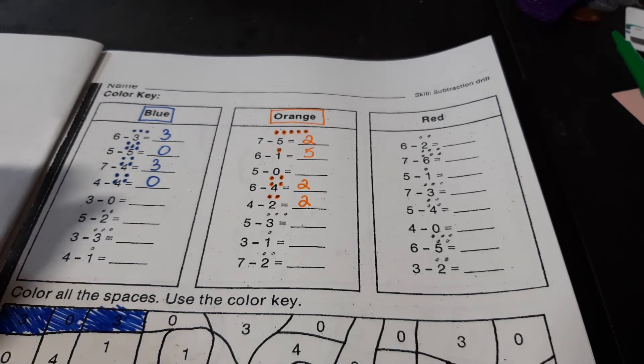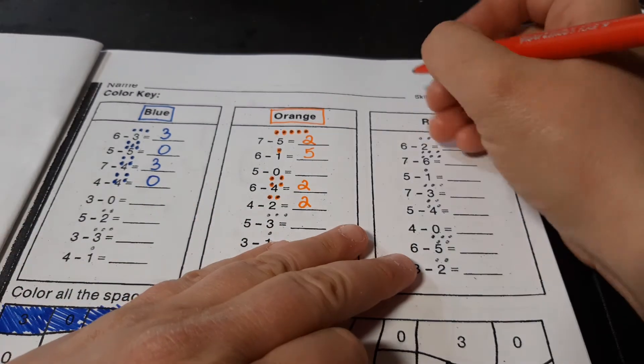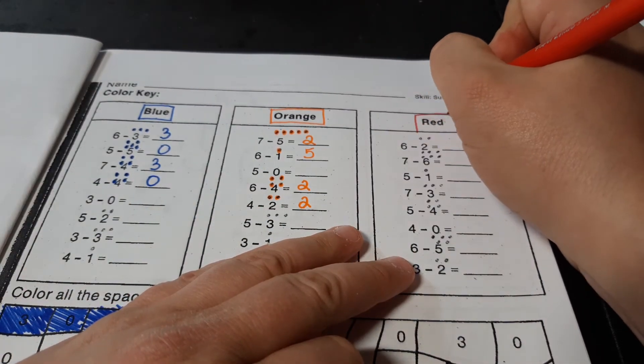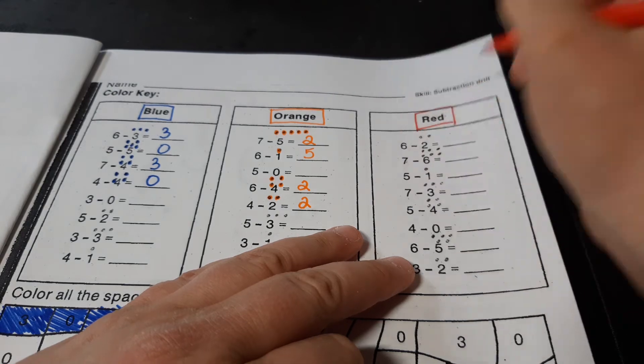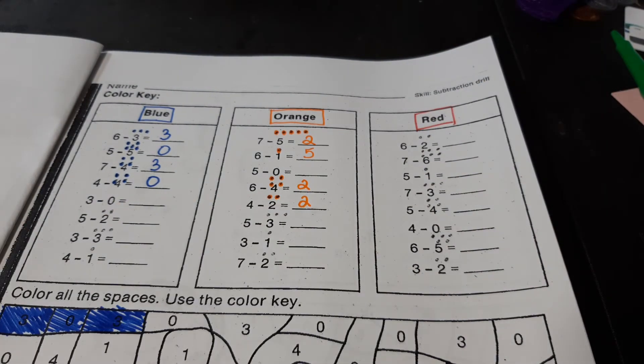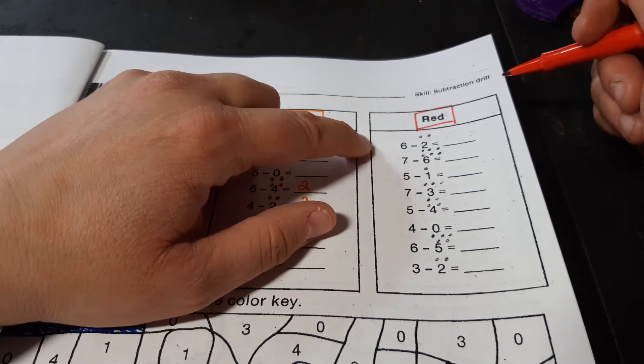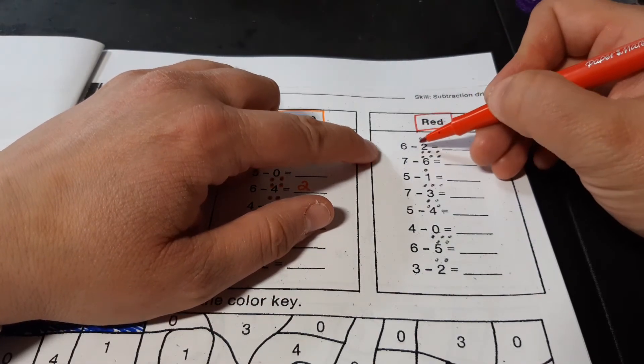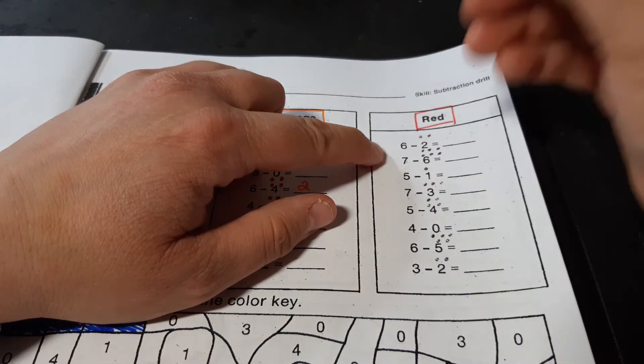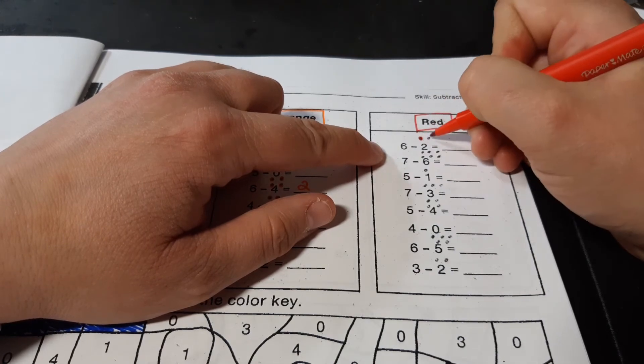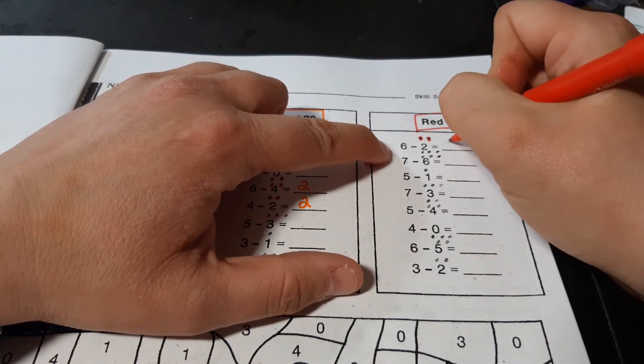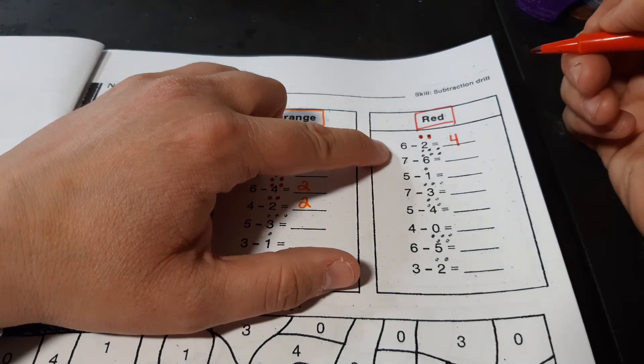This last column is red. All right. So, again, we're going to subtract. So, we have 6 minus 2. 6, 5, 4. 4 is the answer. I'm going to put it right there.